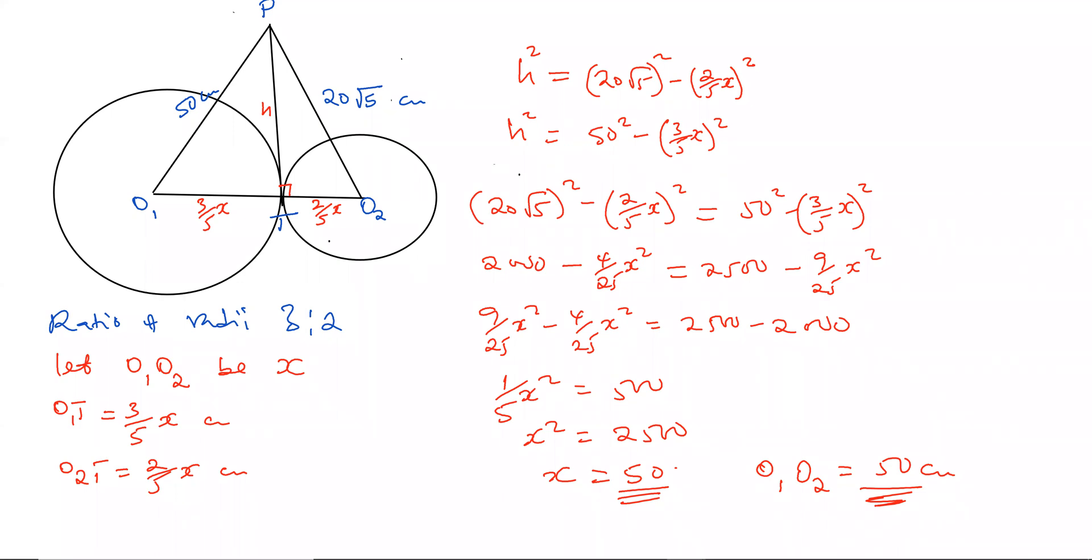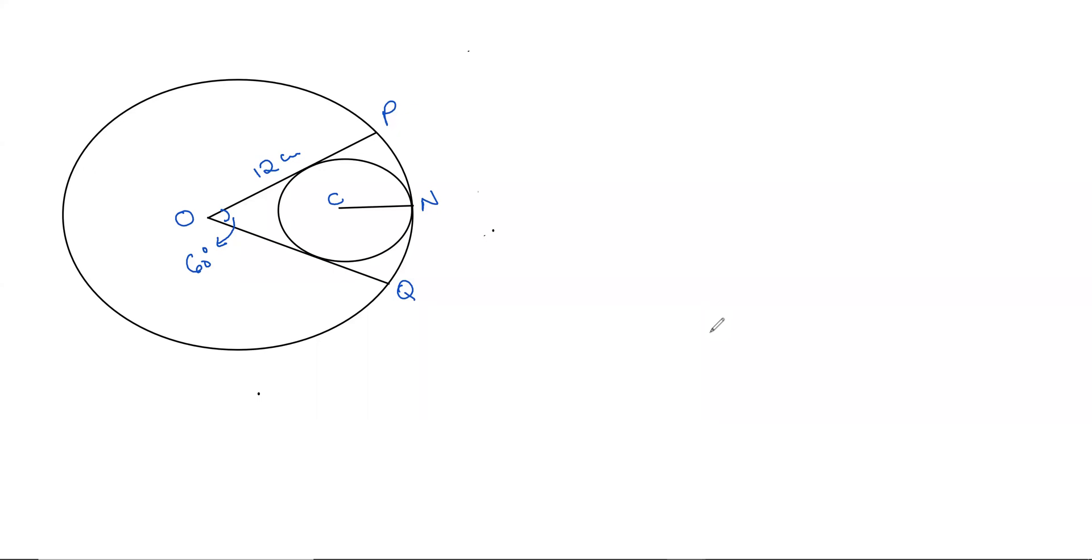What are our questions? Okay, in the figure, the circle centers O and C, as we can see them - the O center, the C center - touch internally at N, this is point N. And angle POQ is 60 degrees, just like I've done it there. If the radius of the larger circle is 12 centimeters, calculate the radius of the smaller circle.